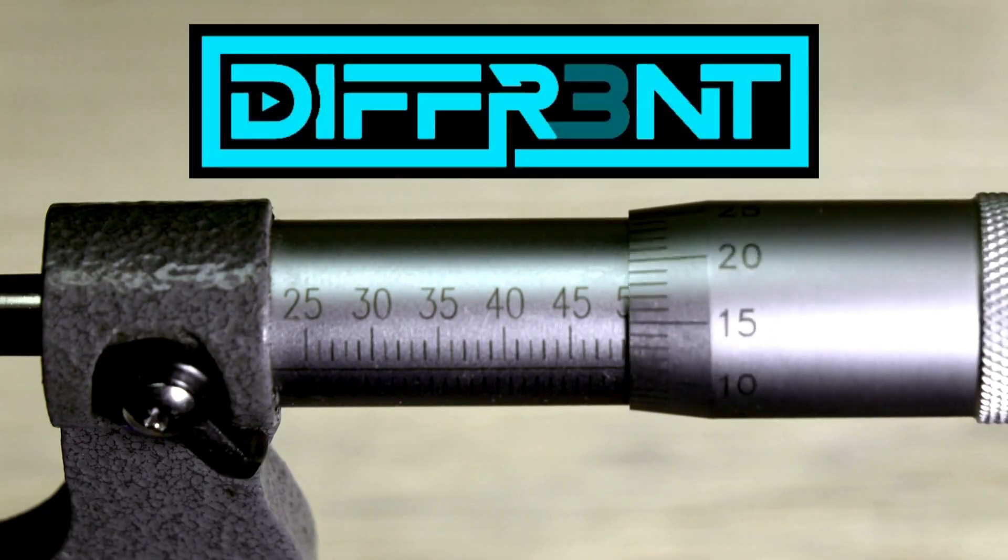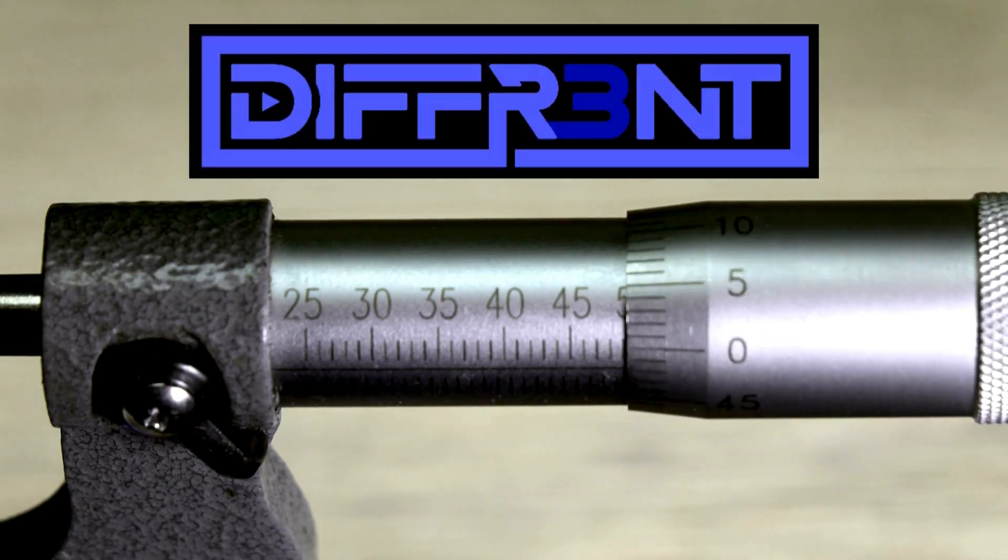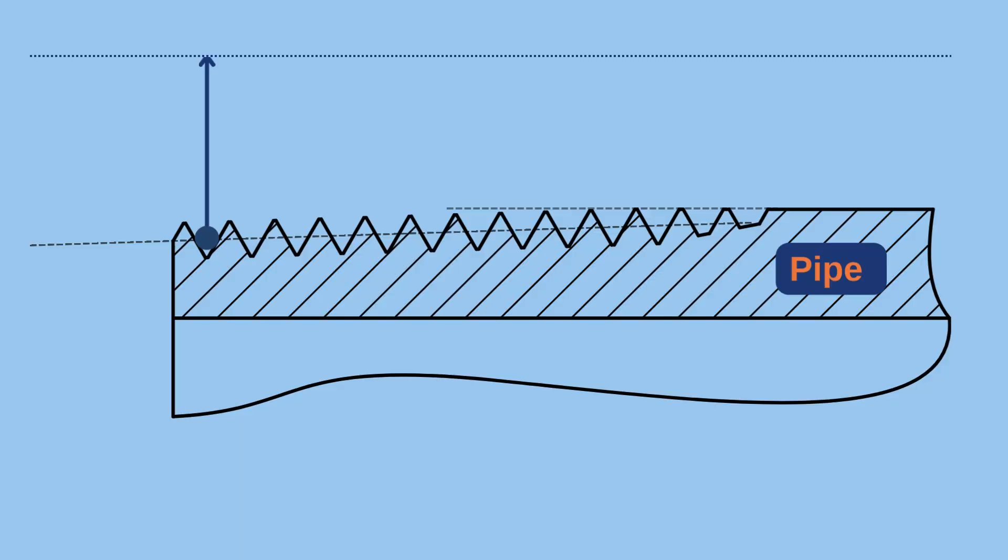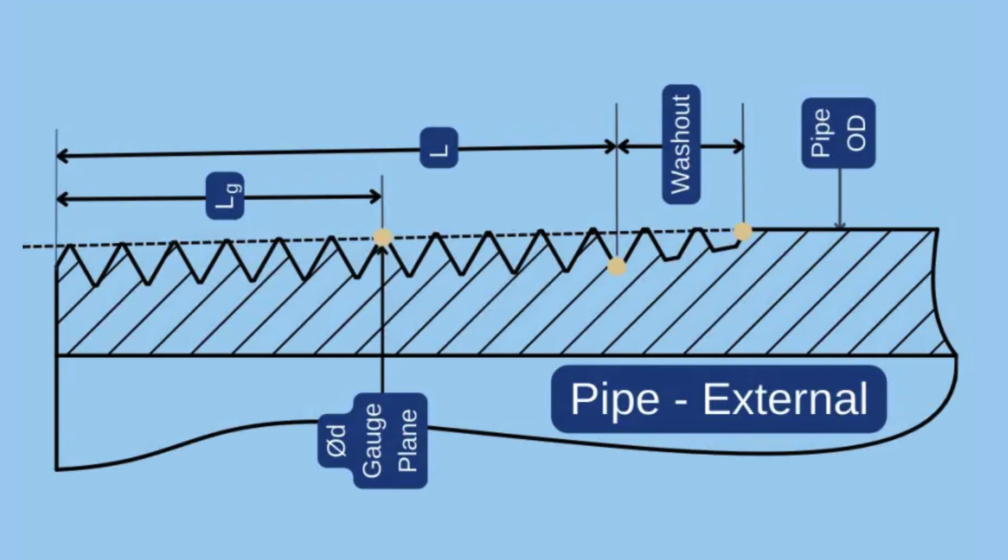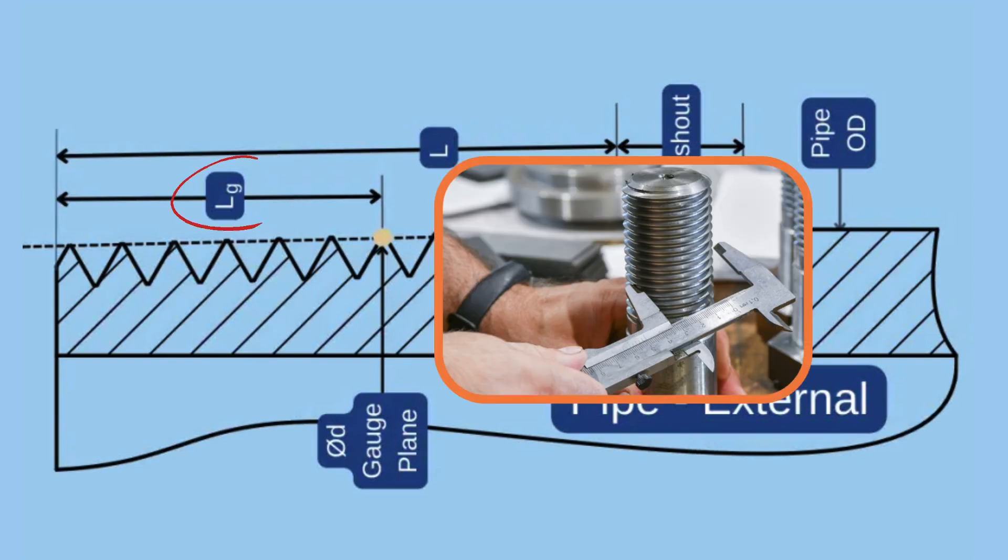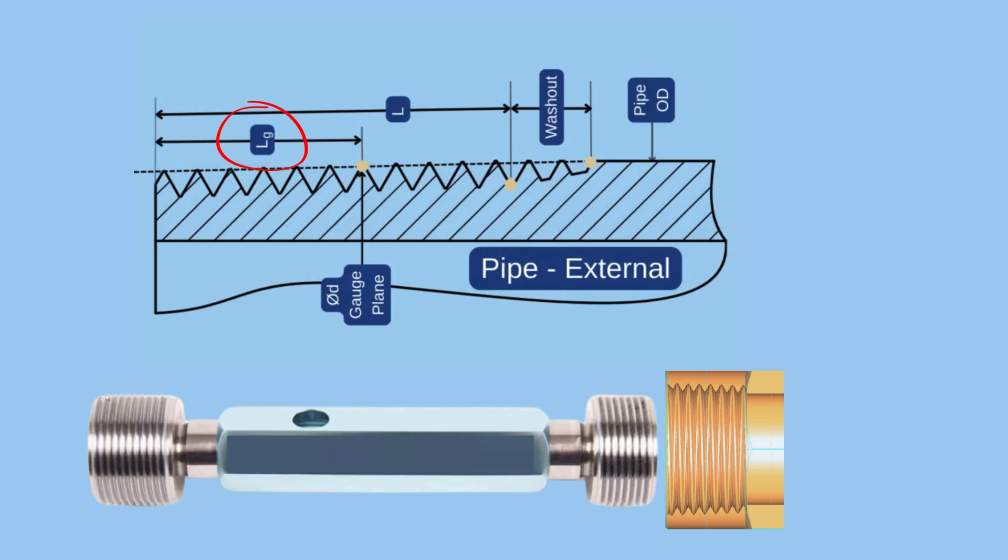The inspection of tapered threads differs from what we are used to in the more common parallel threads, since the diameters vary as we move along the thread's axis. The primary parameter is the gauge length, denoted by LG. It defines the distance from the thread's end at which the measurements of diameters are made. The tolerance of LG is defined by the number of turns that the gauge can make from the nominal point.